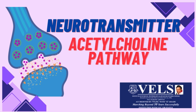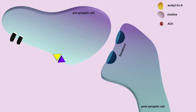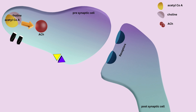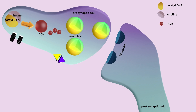Acetylcholine synthesis, storage, and pathway: the neuron combines acetyl-CoA, which is synthesized from glucose, and choline in a reaction catalyzed by choline acetyltransferase to form acetylcholine, which is further stored in vesicles present in the presynaptic neuron cells.